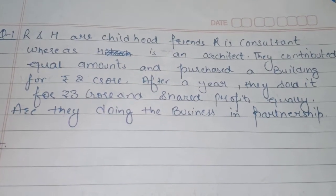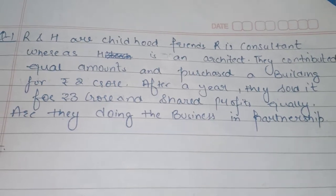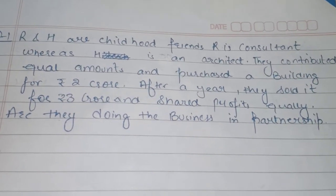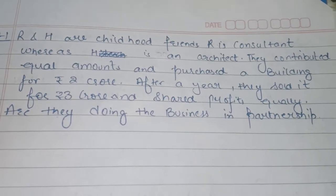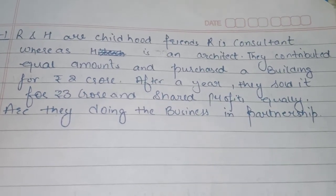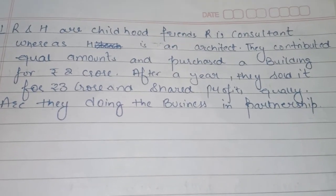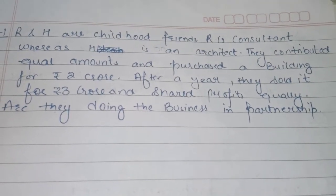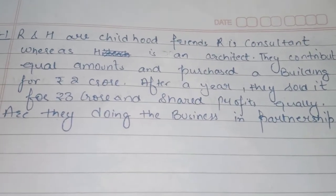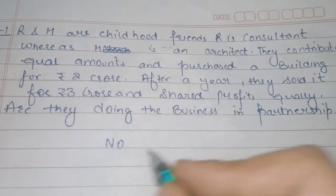Where R and H are childhood friends — R is a consultant, H is an architect — they contributed equal amounts, purchased a building, and after a year sold it and shared profits equally. But they are not doing business with any continuity. They have not opened a firm together where they regularly buy and sell buildings. So they are not doing partnership.